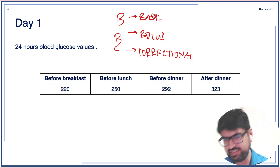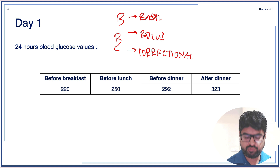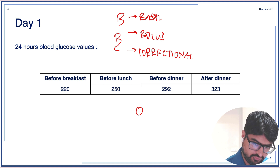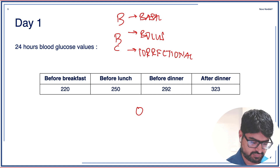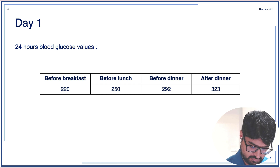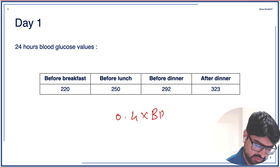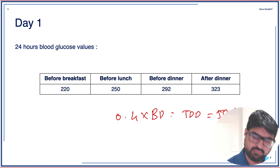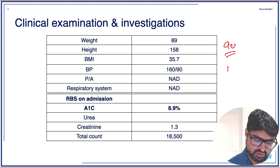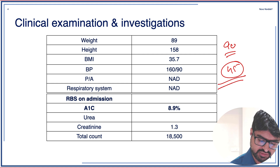Now, how do you calculate the dose of basal insulin? One way is using the weight-based formula: 0.4 multiplied by body weight gives the total daily dose of insulin, and 50% of this is used as basal insulin. Taking this patient's weight as approximately 90 kg and rounding 0.4 to 0.5 for simplicity: 0.5 × 90 = 45 units total, and half of that is approximately 22 units of basal insulin.